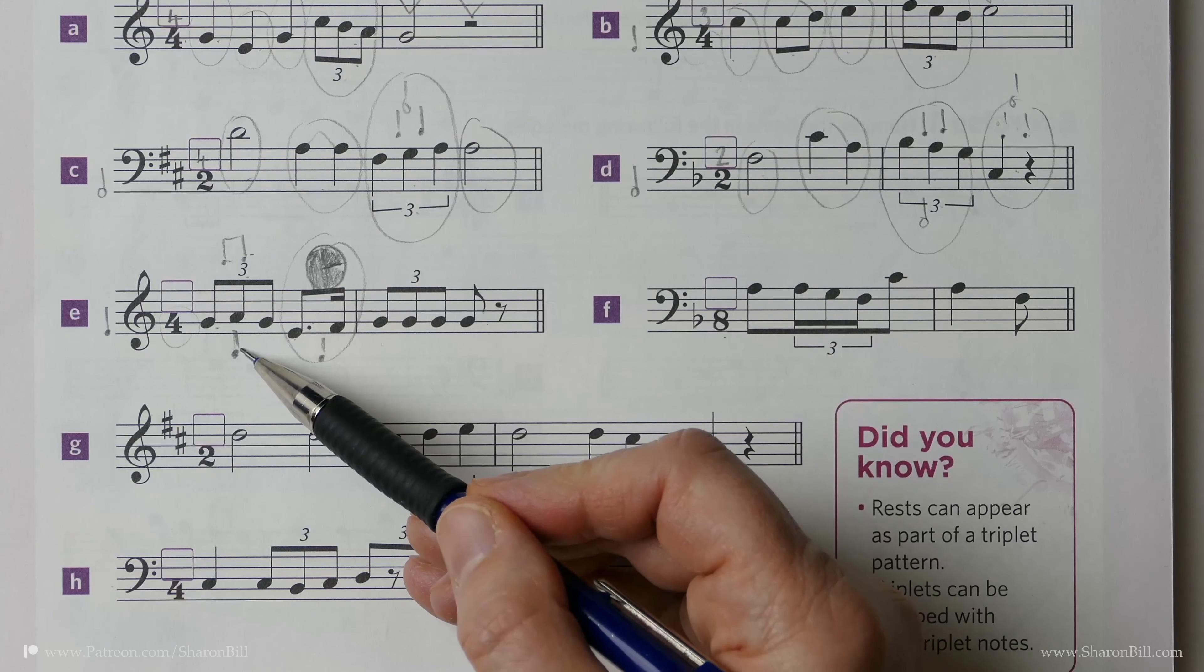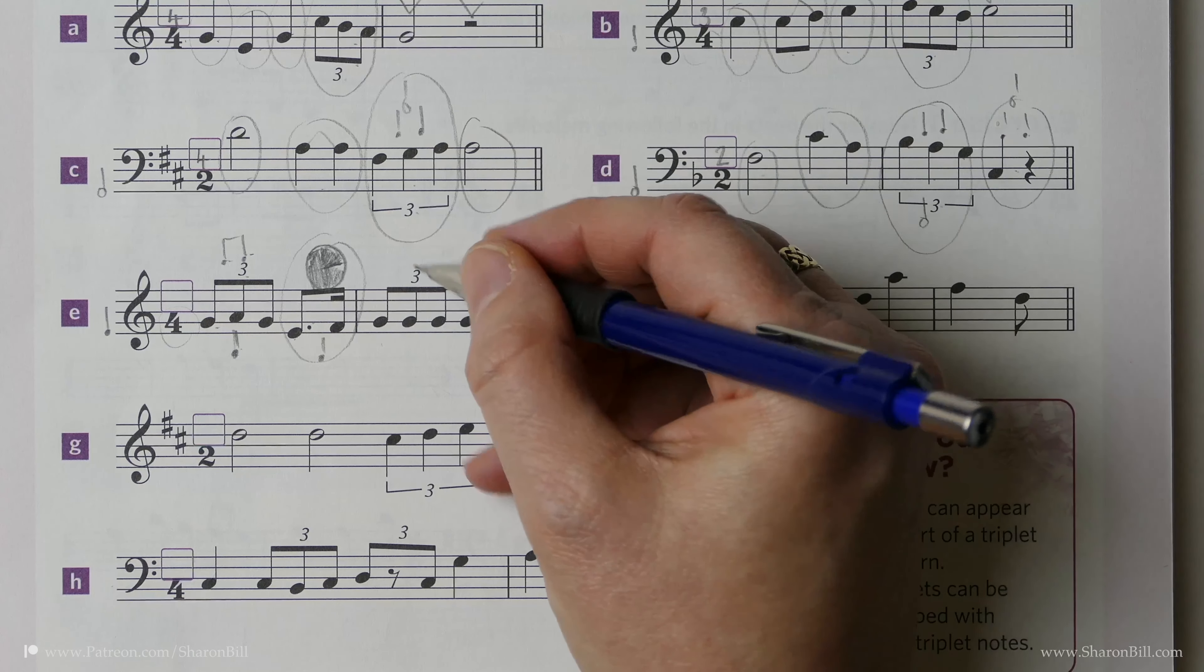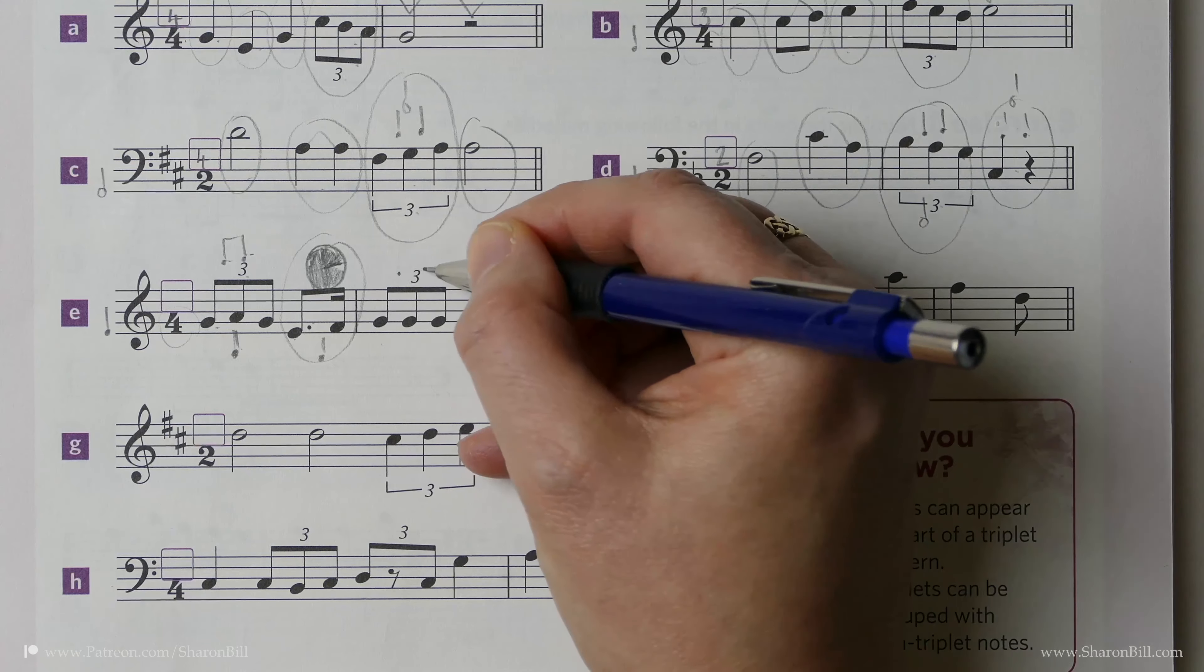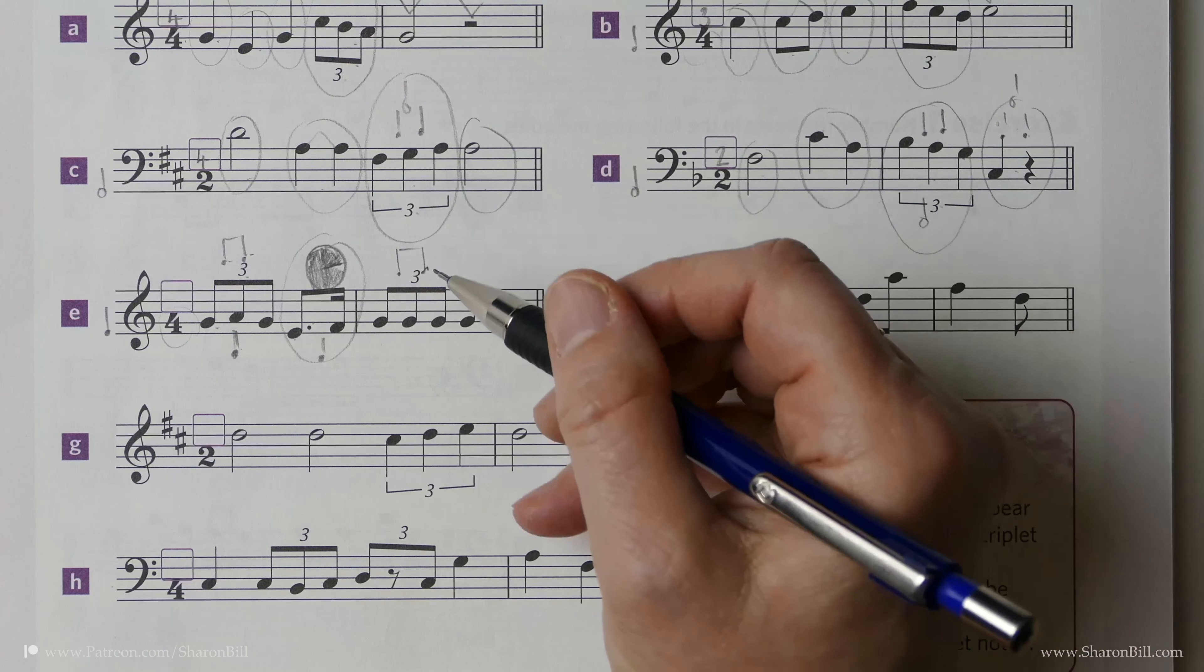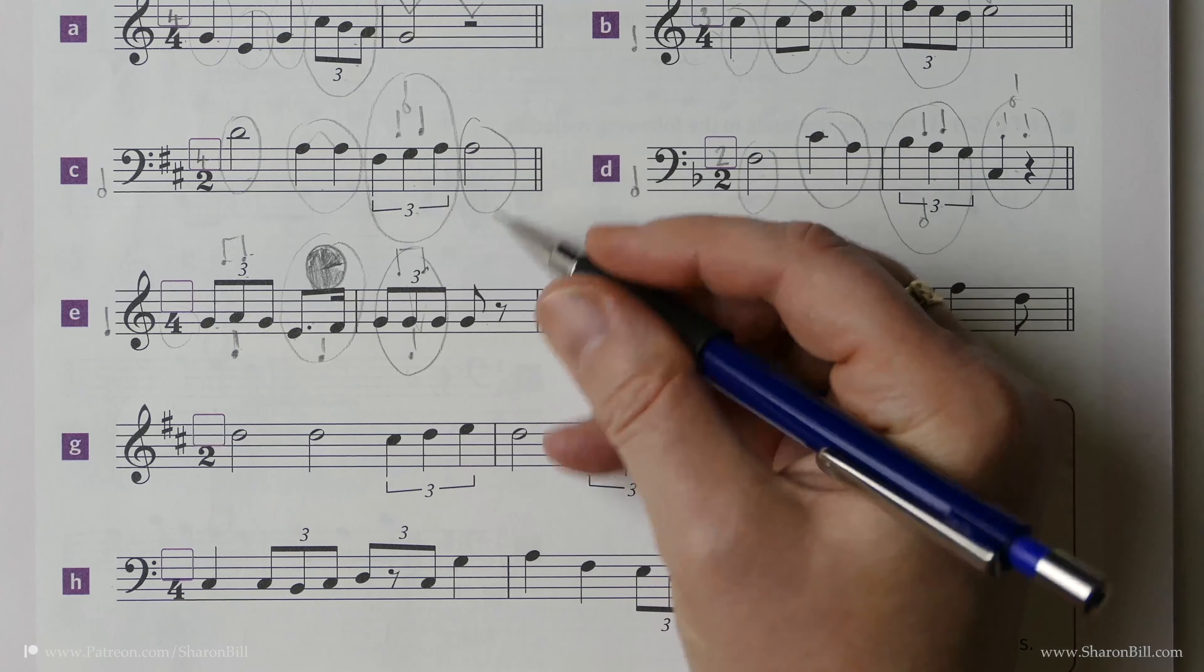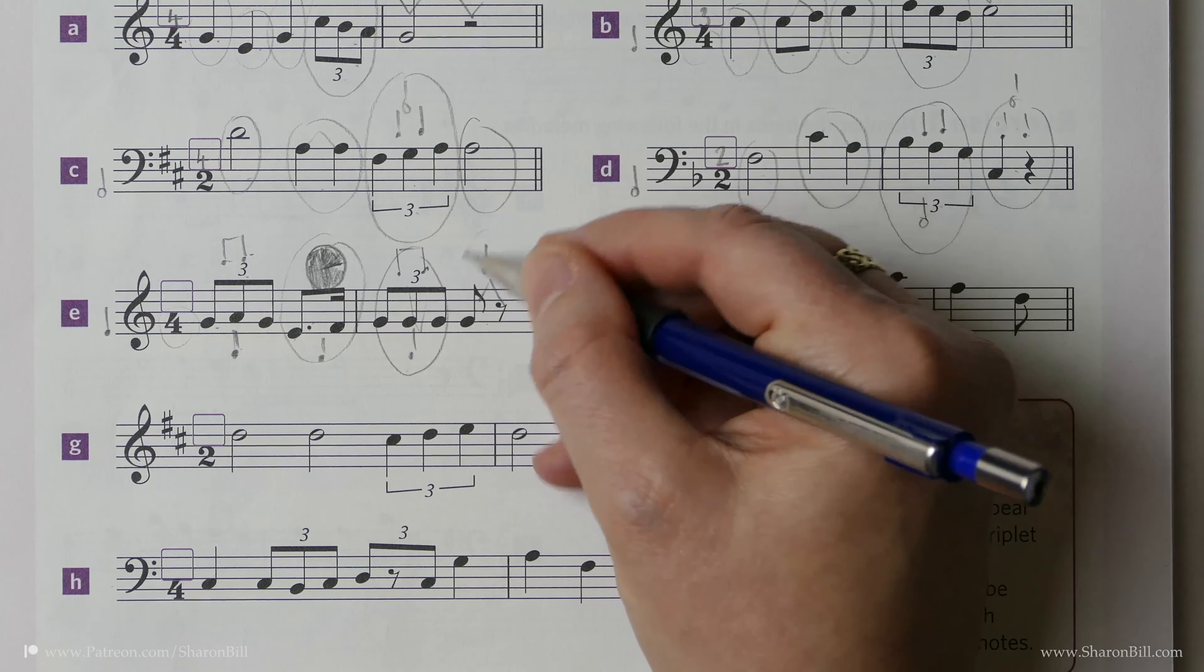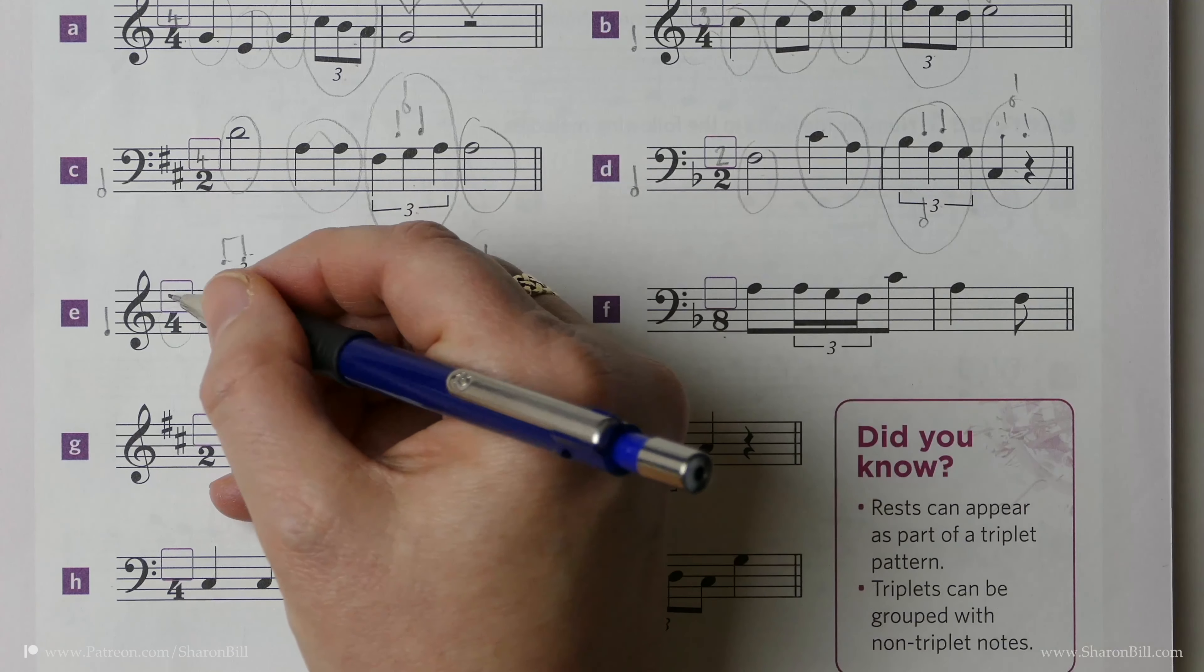So we can see beat 1, beat 2. Let's double check this final bar. We have 3 quaver beats in the time of 2 quaver beats, which we know is 1 crotchet. There's 1 beat. And then we have a quaver note and a quaver rest, which again is a crotchet beat. So 1, 2, that's correct.